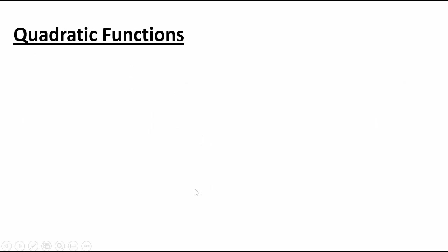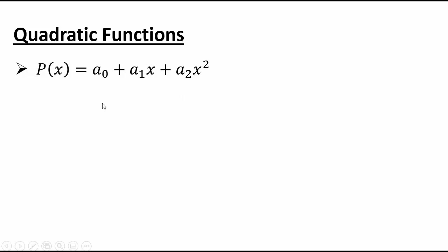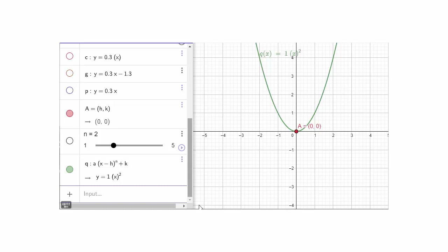Now let's look at quadratic functions. A quadratic function has a constant term, an x term, and an x squared term where the coefficient of x squared is non-zero. The degree is 2. The graph of this function will be a transformation of the power function x squared. We already know that y equals x squared is a parabola with vertex at (0, 0), which is the minimum point on the parabola.